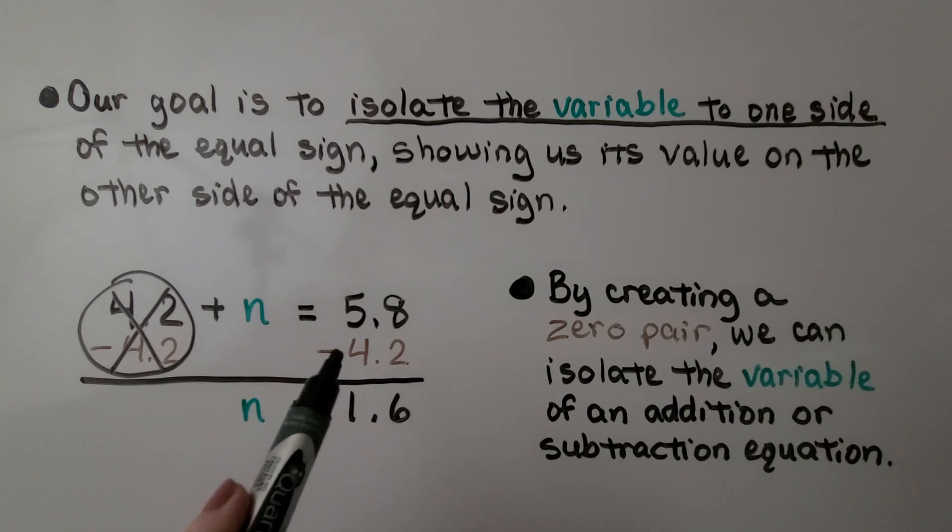When we subtract 4 and 2 tenths from 5 and 8 tenths, we get 1 and 6 tenths. We know n is equal to 1 and 6 tenths. By creating a zero pair, we can isolate the variable of an addition or subtraction equation.